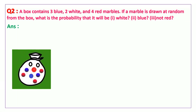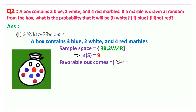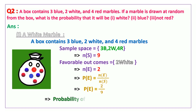Let us consider the first question: getting a white marble from the bag. Since the box contains 3 blue, 2 white, and 4 red marbles, the sample space gives n of s equal to 9. Here the event is taking out a white marble, so the favorable outcomes are 2 white marbles, implying n of e is equal to 2. The probability p of e is equal to n of e by n of s, which gives p of e equal to 2 by 9. So the probability of taking a white marble from the bag is 2 by 9.